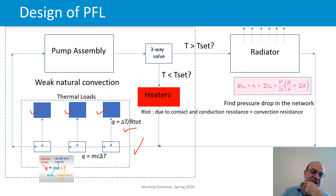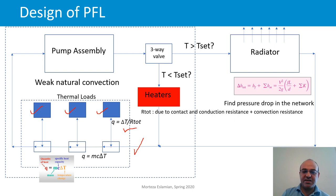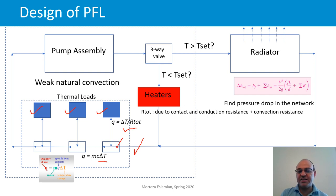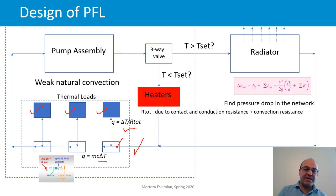The convection heat transfer is expressed as delta T divided by the total thermal resistance, which consists of conduction resistance through the tube walls and the convection resistance itself. As the fluid passes through each heat sink junction receiving heat Q, the temperature increase of the fluid is equal to Q divided by MC — the thermal capacitance of the fluid. The temperature change before and after each heat sink section is not substantial.